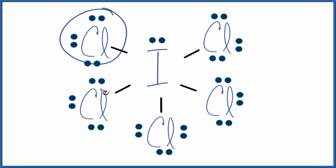You'll notice each chlorine has an octet, but the central iodine has more than eight valence electrons. It has an expanded octet. That's okay. Iodine can have an expanded octet. So we have our Lewis structure.